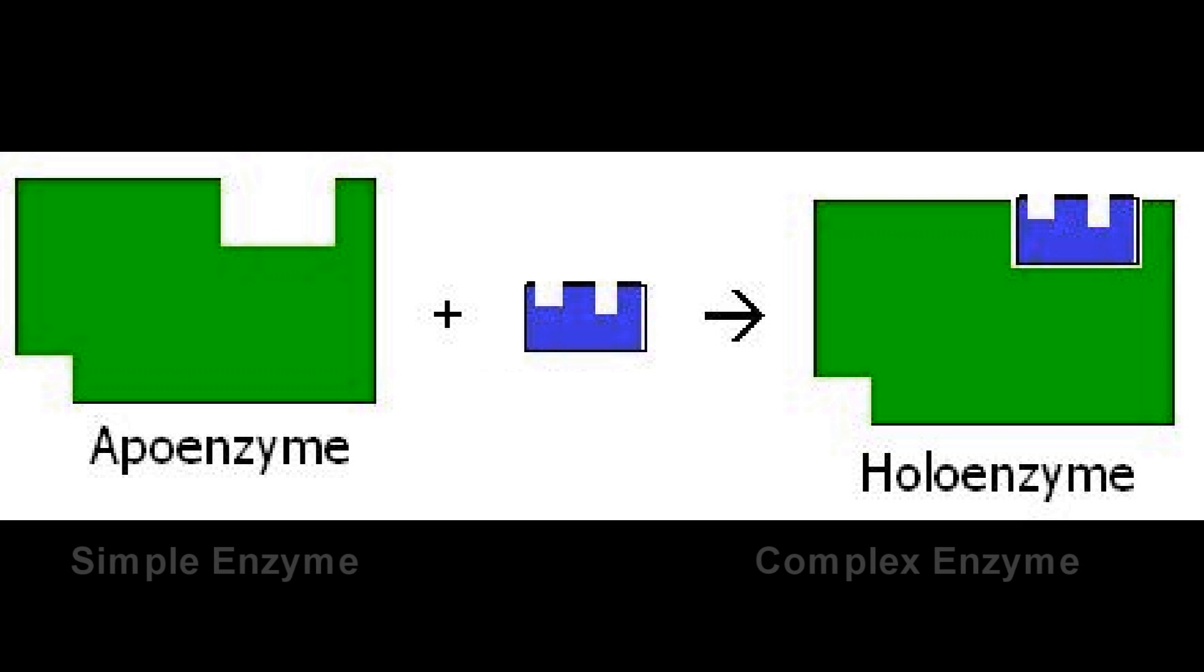There's going to be two main types of enzymes. We have simple enzymes and complex enzymes. The simple enzyme, the example would be ribonuclease, is just a globular protein. Then we have complexes. It's going to be the simple enzyme plus a relatively small organic molecule. We're going to call that a holoenzyme, whereas the simple enzyme is an apoenzyme. So the complex is going to be an apoenzyme plus a small organic molecule. Again, we call that a holoenzyme.